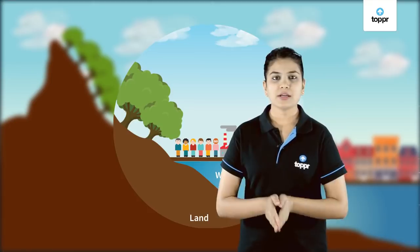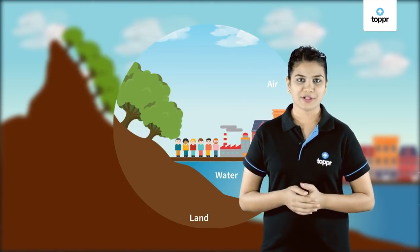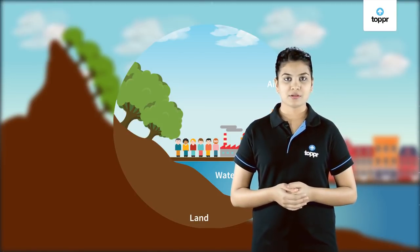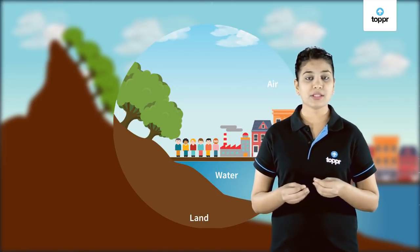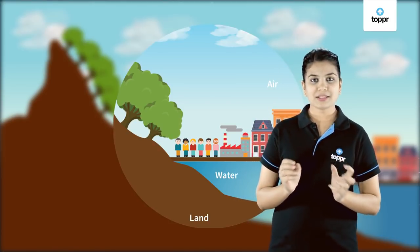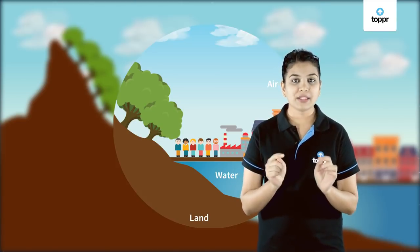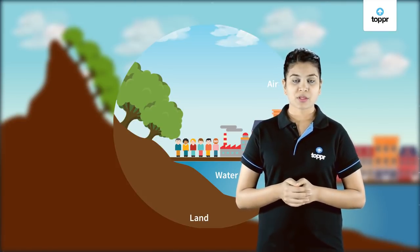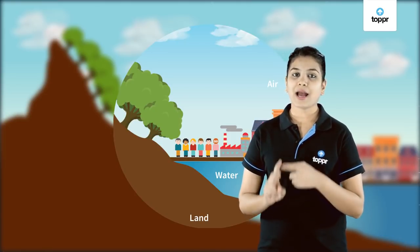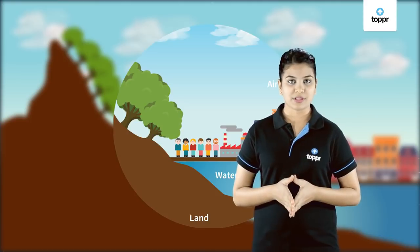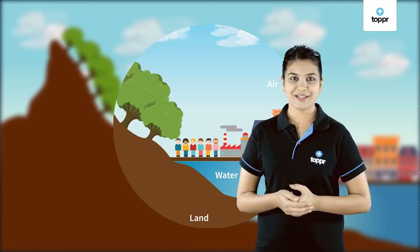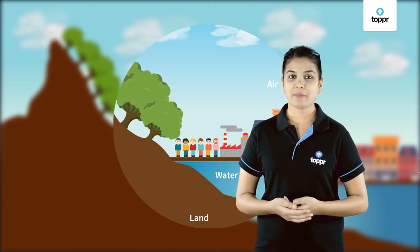The biosphere consists of two important components: the biotic and the abiotic component. These two components continuously interact with each other to make the system dynamic but stable. In this system there occurs a transfer of matter and energy between the various components. Let's now discuss a process which helps in maintaining this balance of the biosphere.